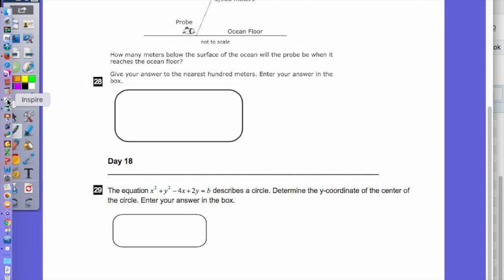So we want to be able to write this as an equation of a circle, and then we're going to find the y-coordinate of the center of the circle. The first thing we need to remember is the equation of a circle is x minus h quantity squared plus y minus k quantity squared equals the radius squared. So if we get it in this format, whatever number is here is the x-coordinate of the center of the circle, and whatever number is here is the y-coordinate of the center of the circle.